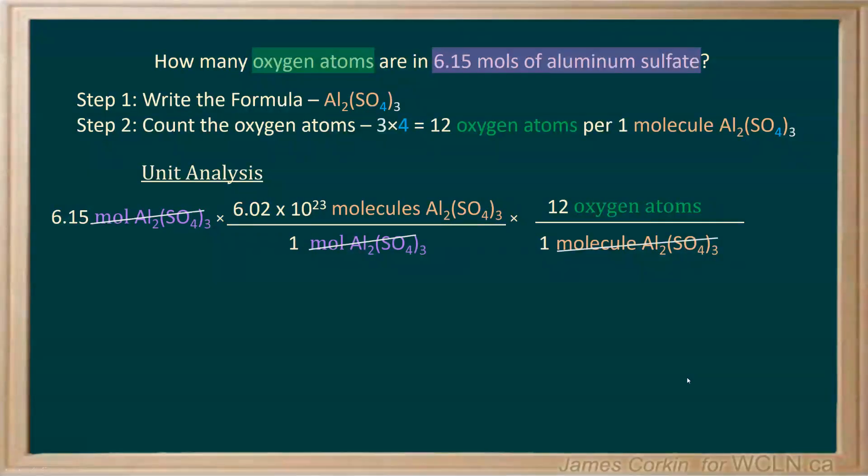Then we go to our calculator. After making sure we correctly cancel units, we enter 6.15 multiplied by 6.02 times 10²³ multiplied by 12. Everything's being multiplied because all our numbers are on top. We can ignore those ones on the bottom.